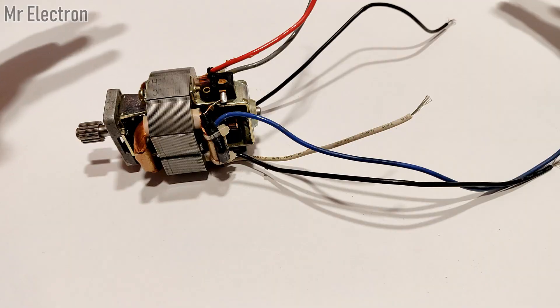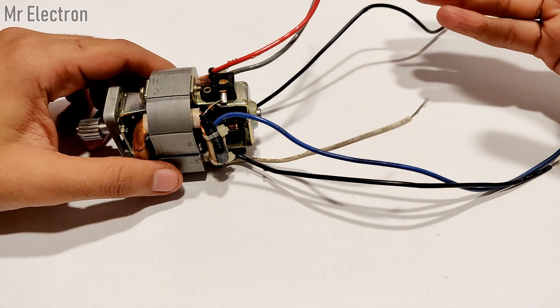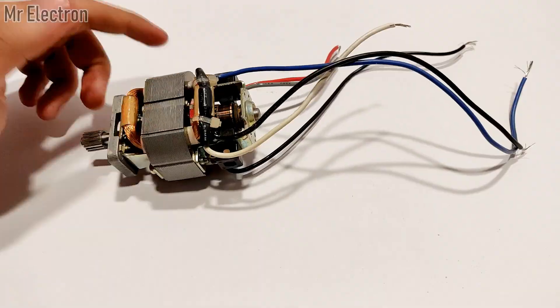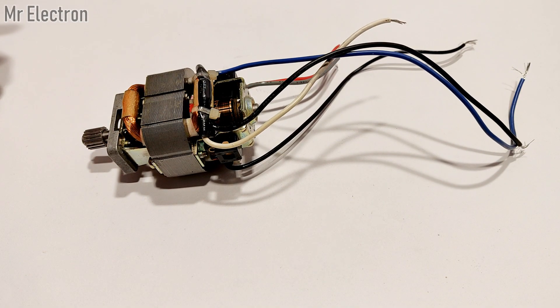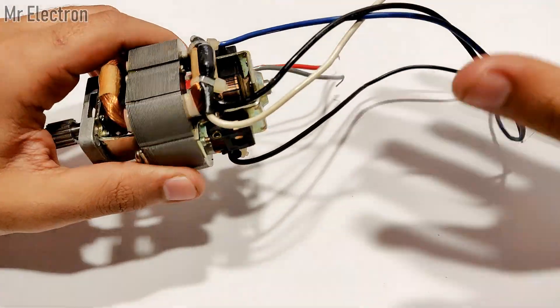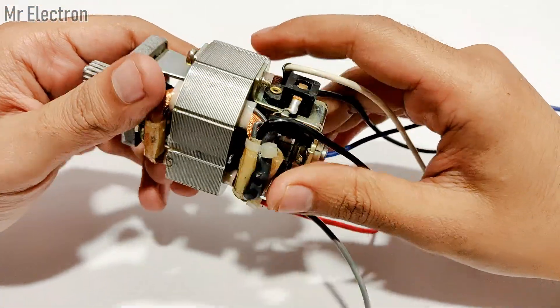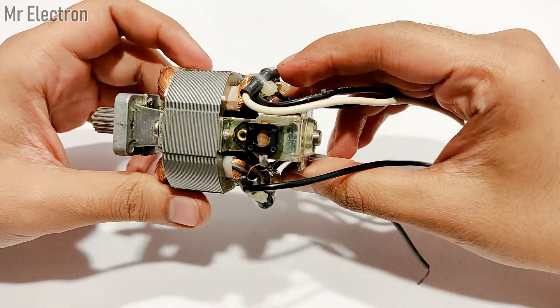Where do we find universal motors in our house? These universal motors are present in mixers, grinders, drill machines, jigsaws, and most power tools. This universal motor is also known as a DC AC series motor.